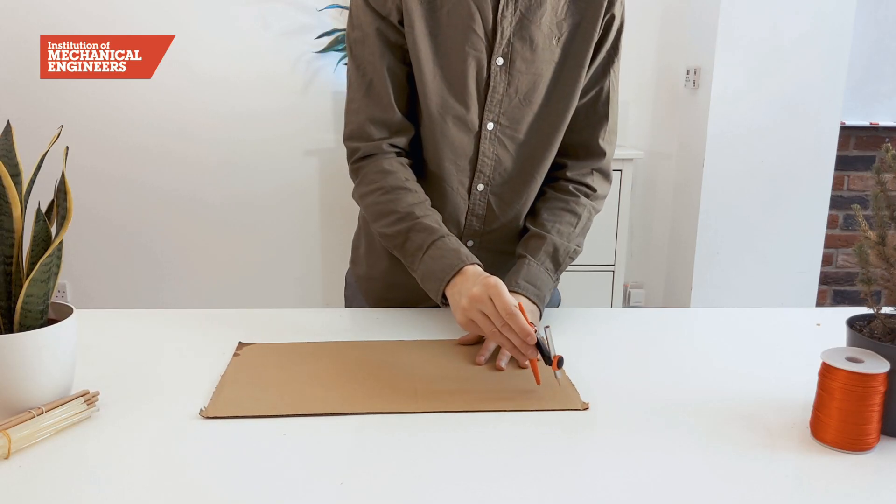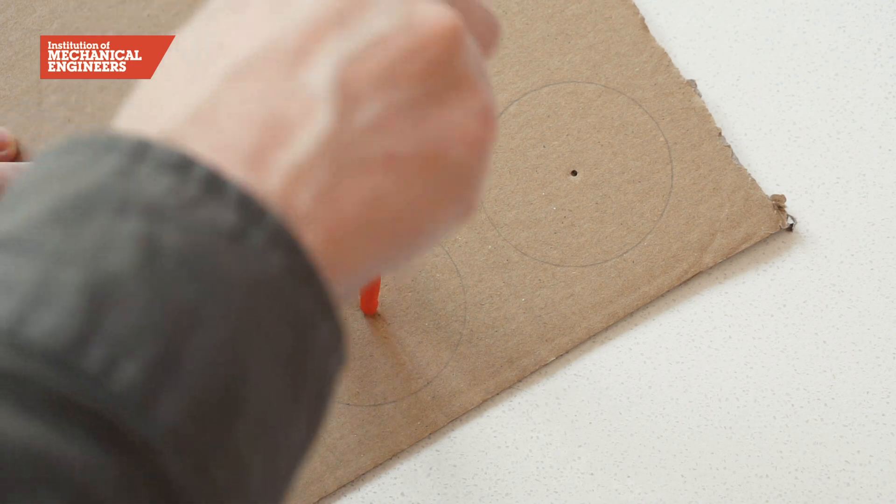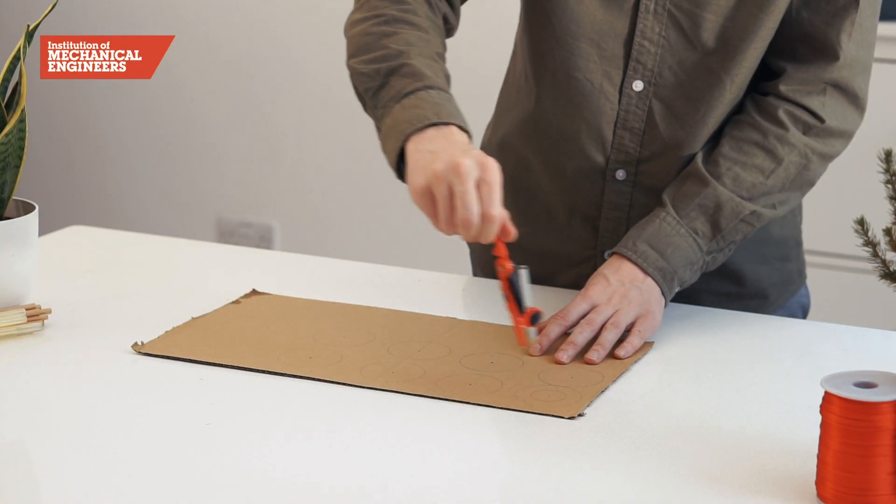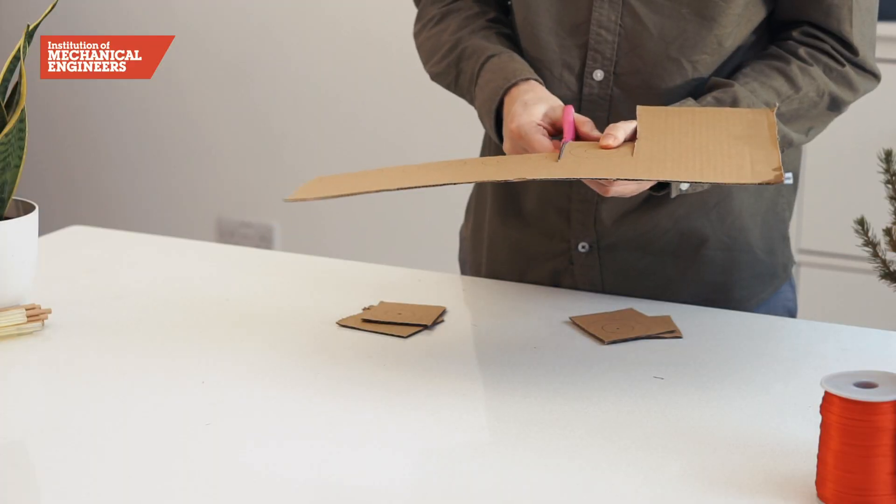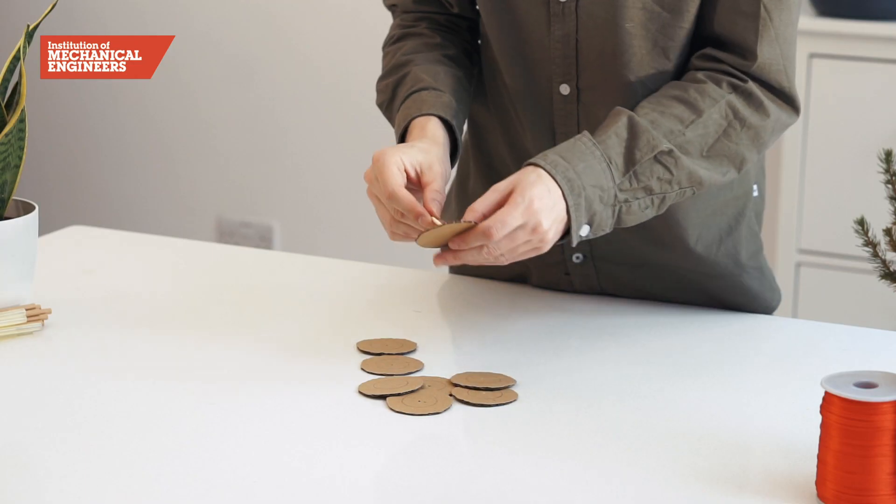To make the wheels for the train use a compass to draw eight circles. Then draw smaller circles inside the larger ones. Cut around the outer circles and pierce a hole in the center of each disc.